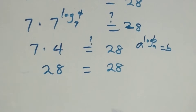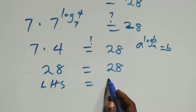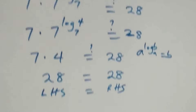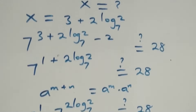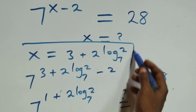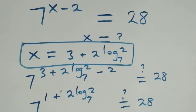We have the left-hand side equal to the right-hand side. Hence we conclude that x equals 3 plus 2 log 2 to base 7 satisfies this given problem. Thank you for watching — don't forget to subscribe for more videos.